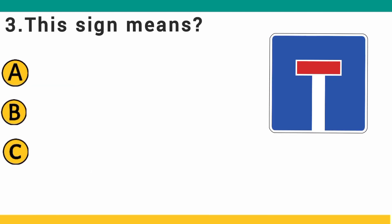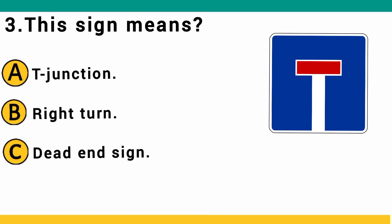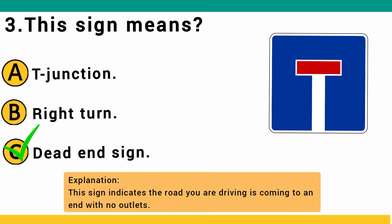This sign means: A) T-junction, B) right turn, or C) dead end sign. The correct answer is C: dead end sign. This sign indicates the road you are driving is coming to an end with no outlet.